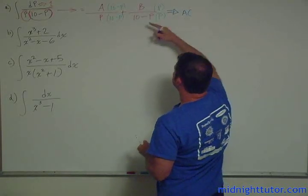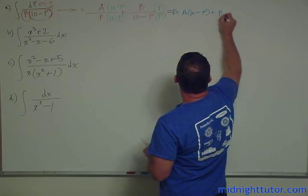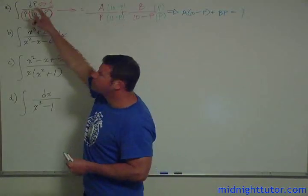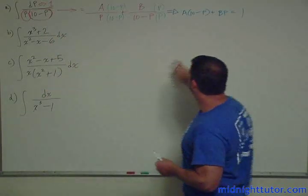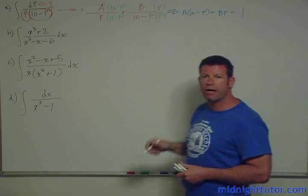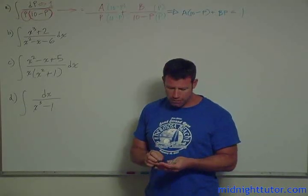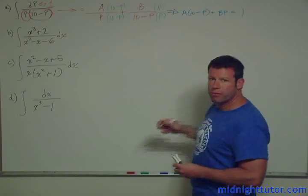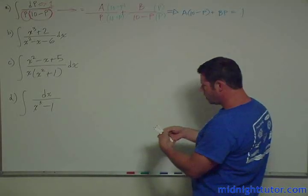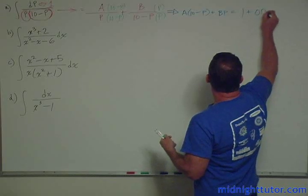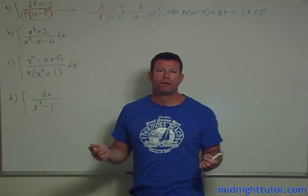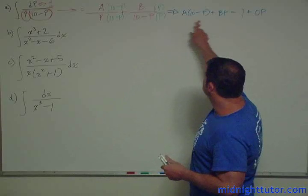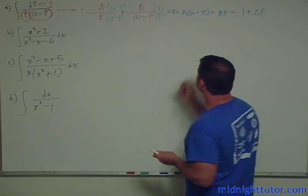A times 10 minus p plus bp equals 1, because that combined numerator has to equal 1. So we have to solve this. We have here two unknowns, a and b. p is the variable. How do we solve this? What we really have here is two equations in two unknowns. We have an equation in terms of the 1 term and we have an equation in terms of the p terms. You can think of this as 1 plus 0p. In order for this to be true, all the terms that have p's in them have to end up to 0 and all the terms that have just numbers in them have to end up to 1.